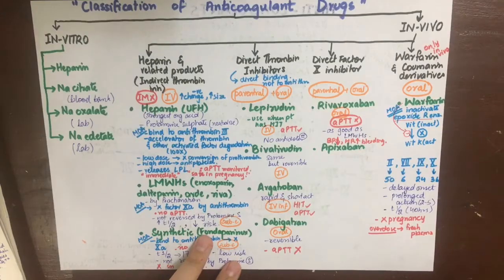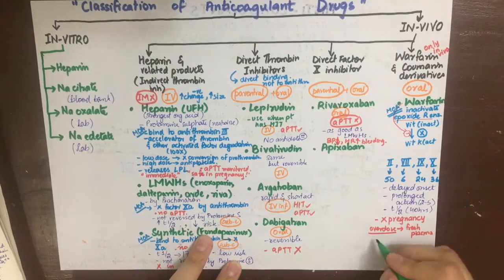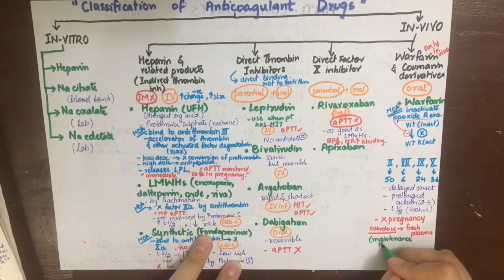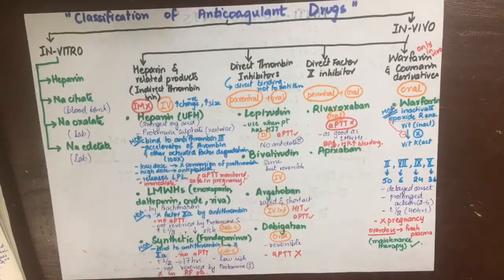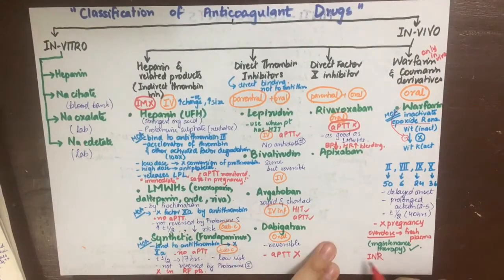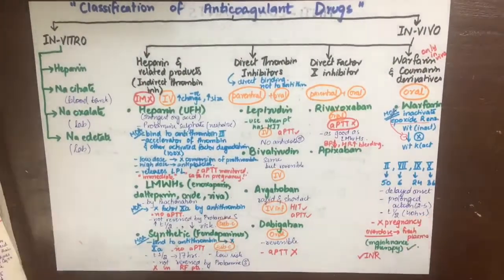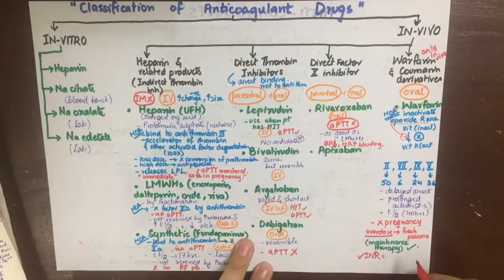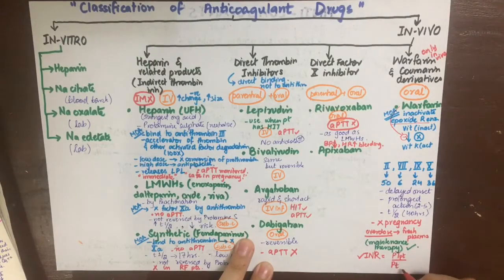During warfarin therapy, we need to monitor the INR, which is the international normalized ratio. It is the ratio between the prothrombin time of the patient and that of a reference. Warfarin has teratogenic properties, so it is contraindicated in pregnancy. It can cross the placenta and it also causes skin necrosis.